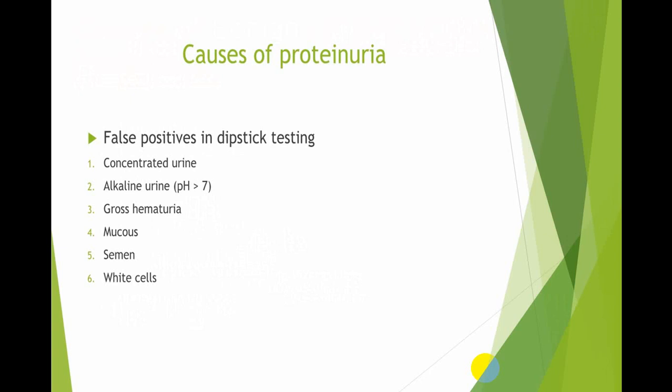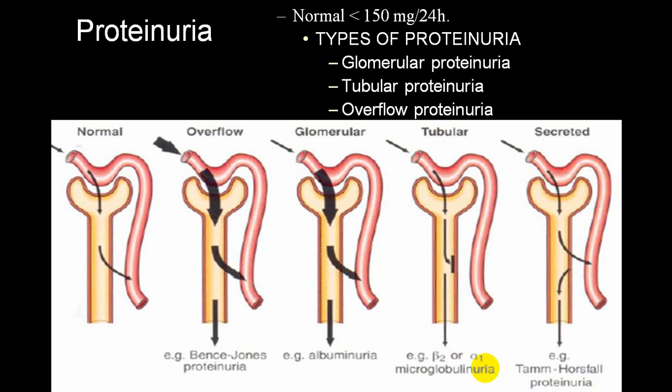False positive tests can be caused by concentrated urine detected by dipstick, alkaline urine, gross hematuria, presence of mucus, presence of semen, or even presence of white blood cells.